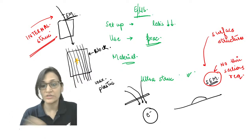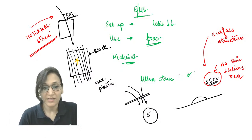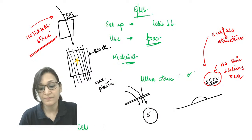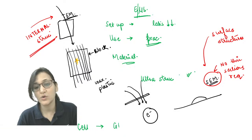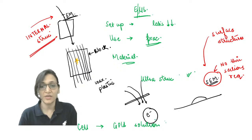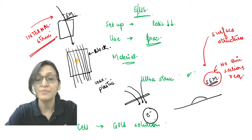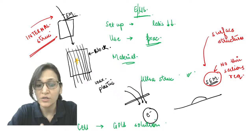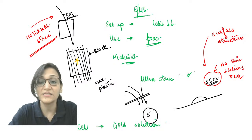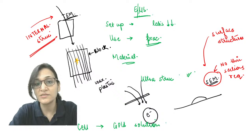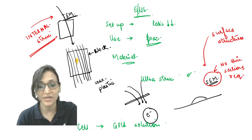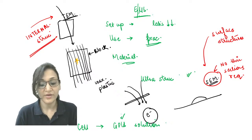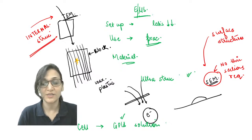For SEM sample preparation, the cell will directly be dipped in a gold solution. Since the illumination material is electron-based, an electron-dense material is used here as well — similar to TEM. So gold solution is used here. For TEM, sample preparation is quite laborious compared to SEM.